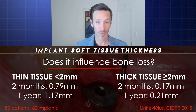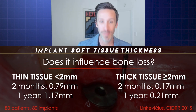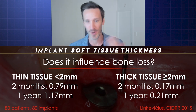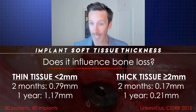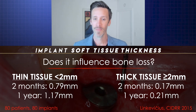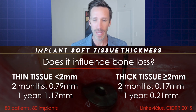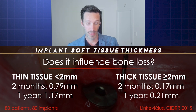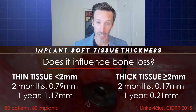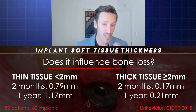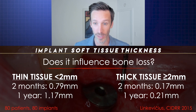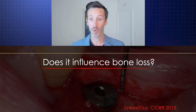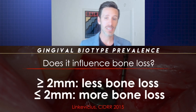Is it clinically different? If it's your mouth or if it's your daughter's mouth or your son's mouth or your husband or your wife's, which one do you want? I want the 0.2, that's for sure. And the only difference in these patients was that the thin tissue patients had less than two millimeters of tissue thickness and the thick tissue patients had more than two millimeters of tissue thickness. Kind of an interesting study.